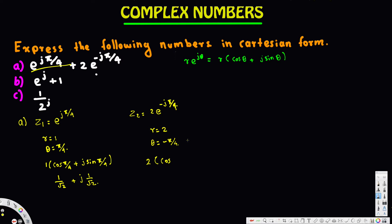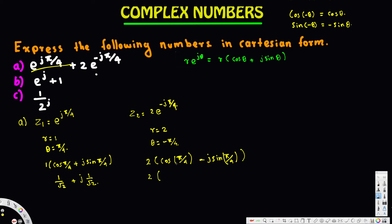Now let's plug in the values. We need to know one thing: when we have cosine and the angle is negative theta, that is equivalent to cosine(theta). But when we have sine and the angle is negative theta, that is equivalent to negative sine(theta). In our case, for cosine we can write positive 5π/4, and for sine of negative 5π/4 we bring the negative in front.